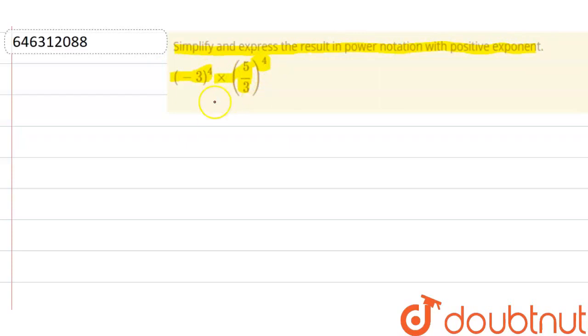Now see, this is what we have. I can write this as (-3)^4, and if I separate the power terms, that is 5^4 / 3^4.